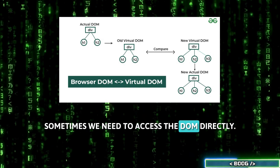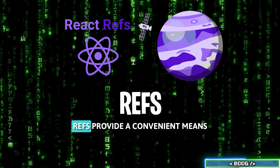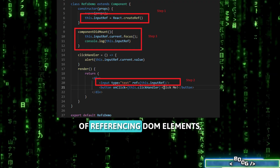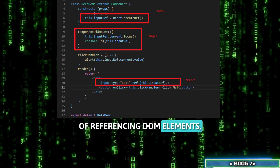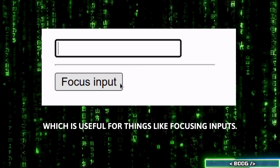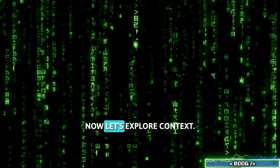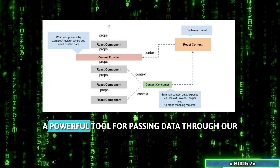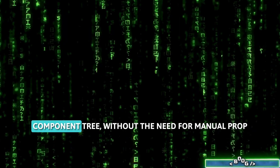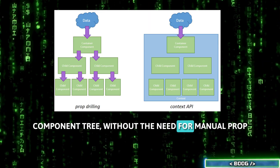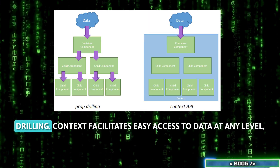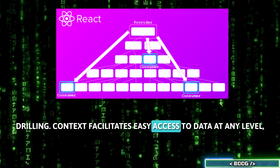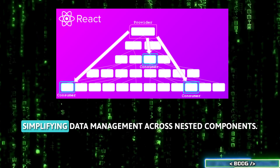Sometimes we need to access the DOM directly. Refs provide a convenient means of referencing DOM elements, which is useful for things like focusing inputs. Now let's explore Context, a powerful tool for passing data through our component tree without the need for manual prop drilling. Context facilitates easy access to data at any level, simplifying data management across nested components.